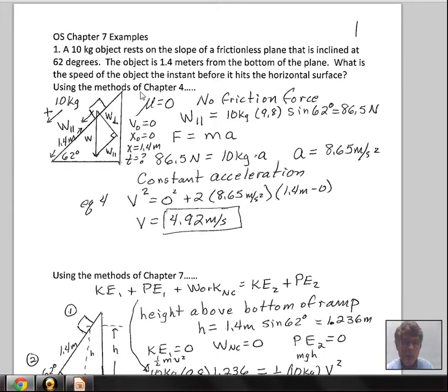So we have a 10 kilogram object on an inclined plane. The plane is frictionless, the angle of the plane is 62 degrees up from the horizontal, and the object is 1.4 meters from the bottom of the plane. The question is: just the instant it's going to be released from rest, just the instant before it reaches the bottom, what is the velocity or the speed going straight down the plane?